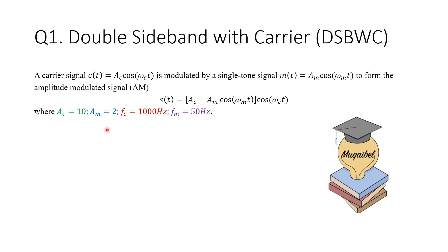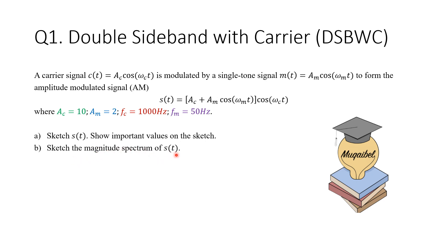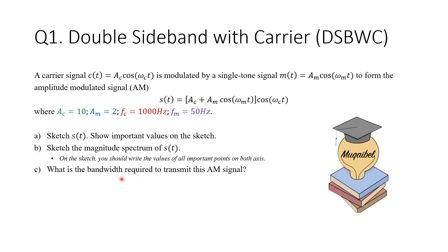The carrier and message frequencies are also given. There are four requirements: first, sketch the signal s(t) showing all important values; second, sketch the magnitude spectrum of s(t) in frequency showing all values on both axes; third, find the bandwidth required to transmit this AM signal; and fourth, calculate the power efficiency. You can pause the video now and take the challenge, then resume to see the answers.